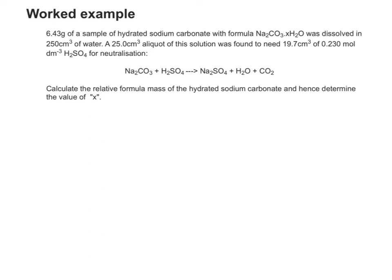However, what you do have some information on is H2SO4. You have 19.7 cm3, and you have 0.230 moles per decimetre cubed. So therefore, we can use N equals V times C. So let's start off with that.